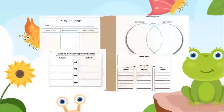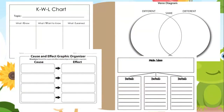Moving on to the strategies and graphic organizers we will be using in order to organize information. We will first start with the KWL chart, which will help you record your prior knowledge and expanded knowledge. You will be able to differentiate between two different topics using a Venn diagram. We will also learn the cause and effect skill, as well as the main idea and supporting details strategy.